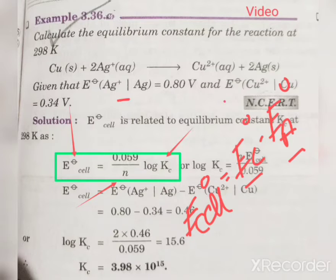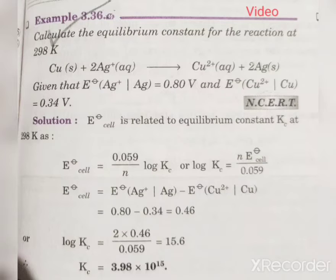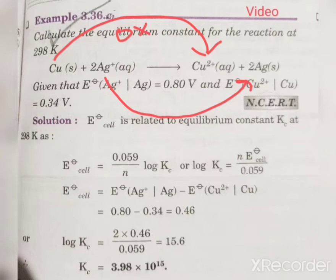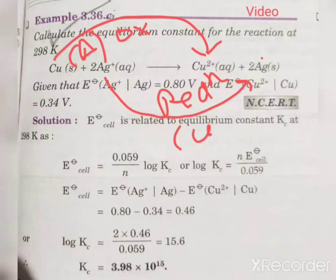It is important to identify which species is at the cathode and which is at the anode. Looking at the equation: copper is converted into copper ion — that is an increase in oxidation number, so it is oxidation, meaning copper is at the anode. Ag⁺ is converted into Ag — that is a decrease in oxidation number, so it is reduction, meaning silver is at the cathode. So E°_cell = E°(Ag⁺/Ag) − E°(Cu²⁺/Cu).